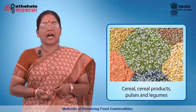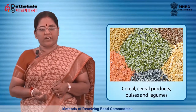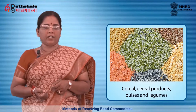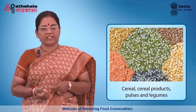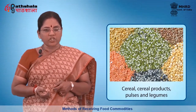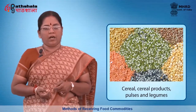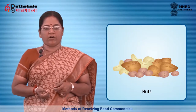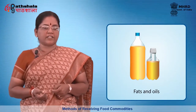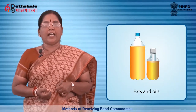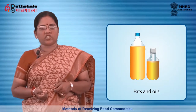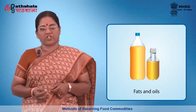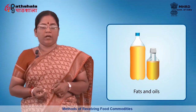For cereals, cereal products, pulses and legumes, examine for presence of insects and foreign materials like stones, hair, etc. Reject if lumpy, discoloured or with odours characteristic of infestation. The packaging should be clean and in good condition. For nuts, reject if there is presence of insects or other residues, or if there is flavour and colour change. For fats and oils, any signs of leakage or unusual seal may indicate spoilage, rancidity or willful contamination; reject if colour is not as expected or the product has any off-flavour.